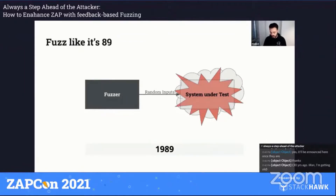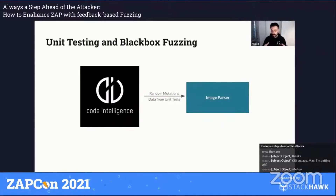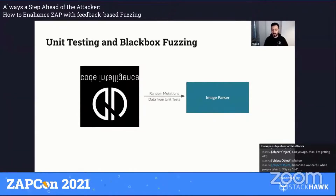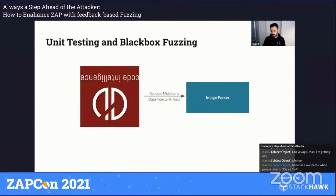In order to mitigate this problem, came the idea of instead of generating random inputs, let's start from the test data that are available anyway with the application. If we take an image parser as an example, usually you would have some images to do unit testing. The idea would be to take this as a seed or starting input and try to do some mutations based on that — trying to change the colors, keep some bits and bytes, and see what's happening. With this, we hope to reach more code coverage. Again, the limitation is that the fuzzer still does not have any insights about what's actually happening inside the program.